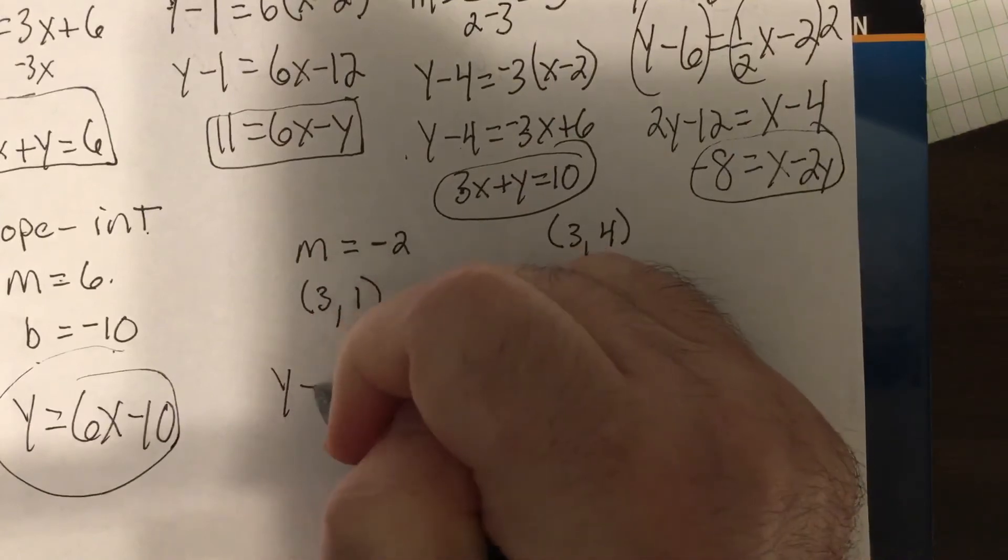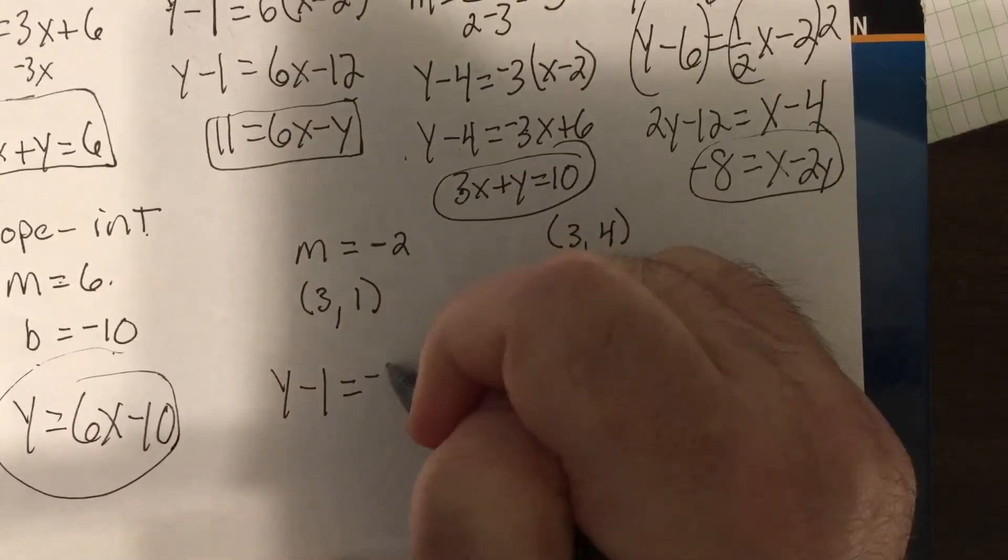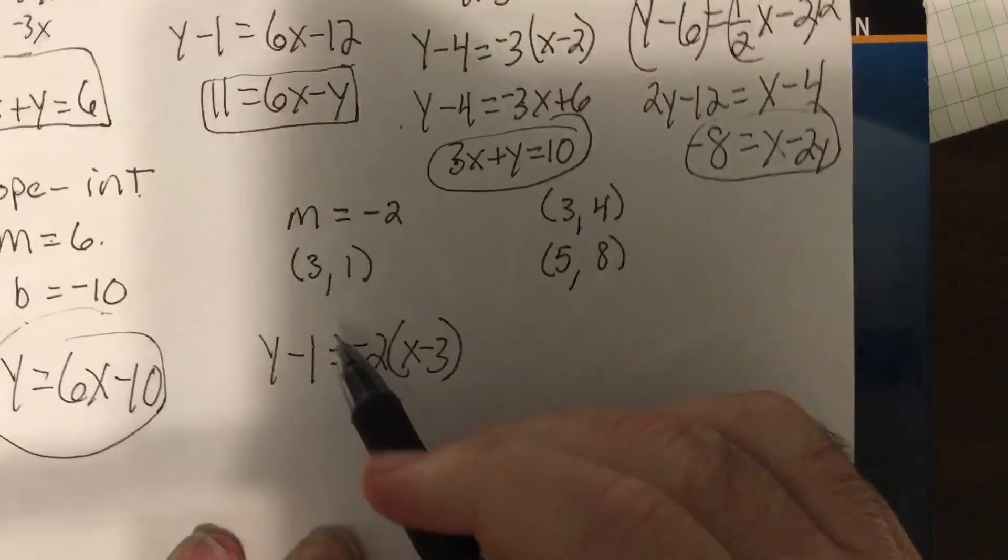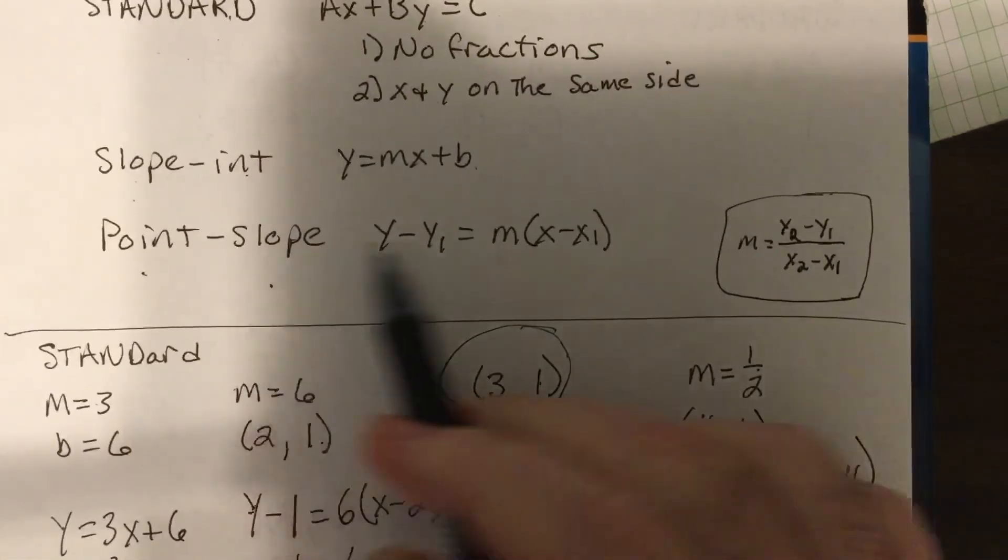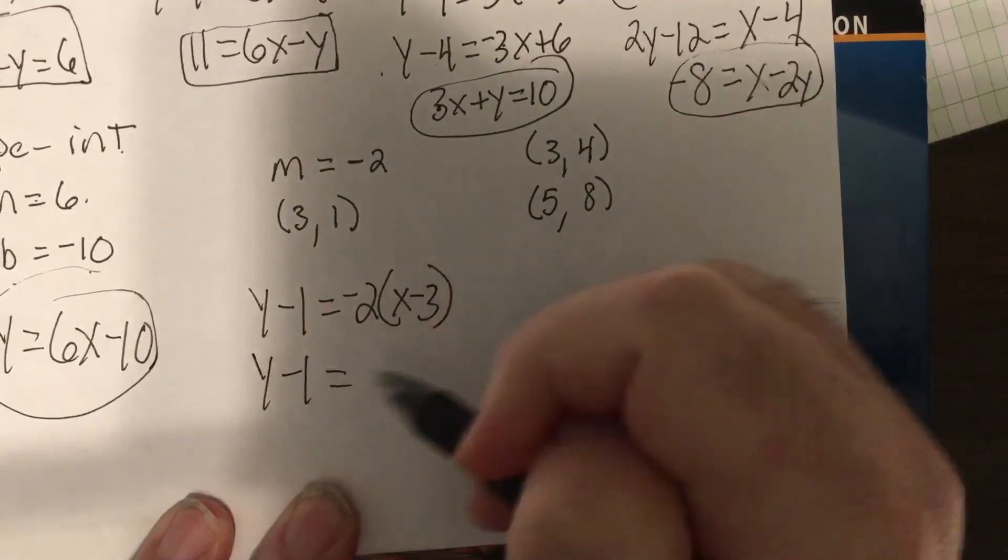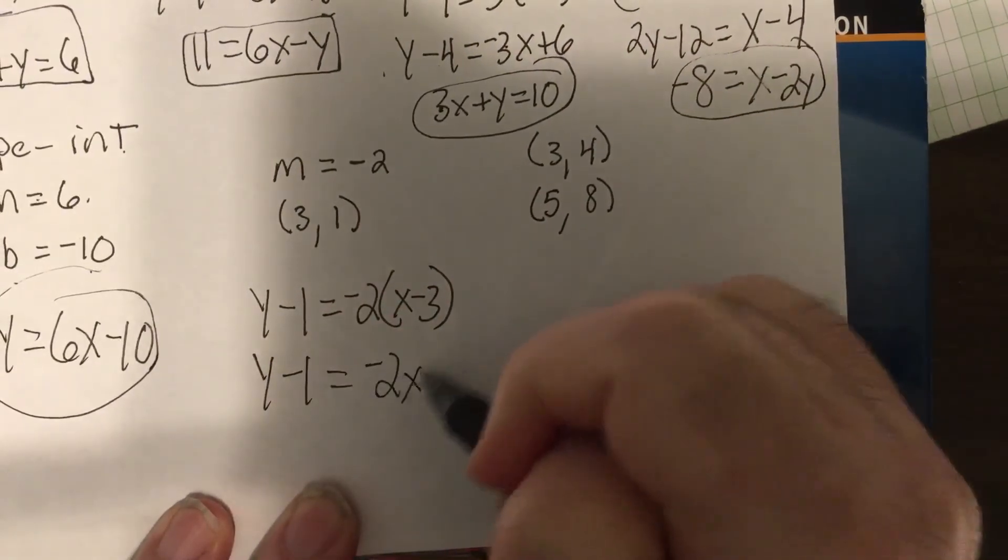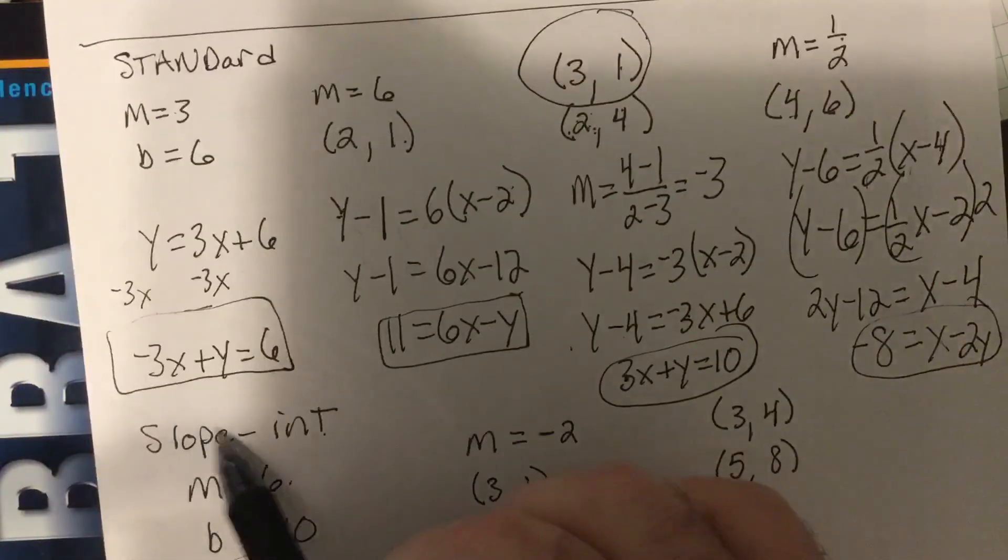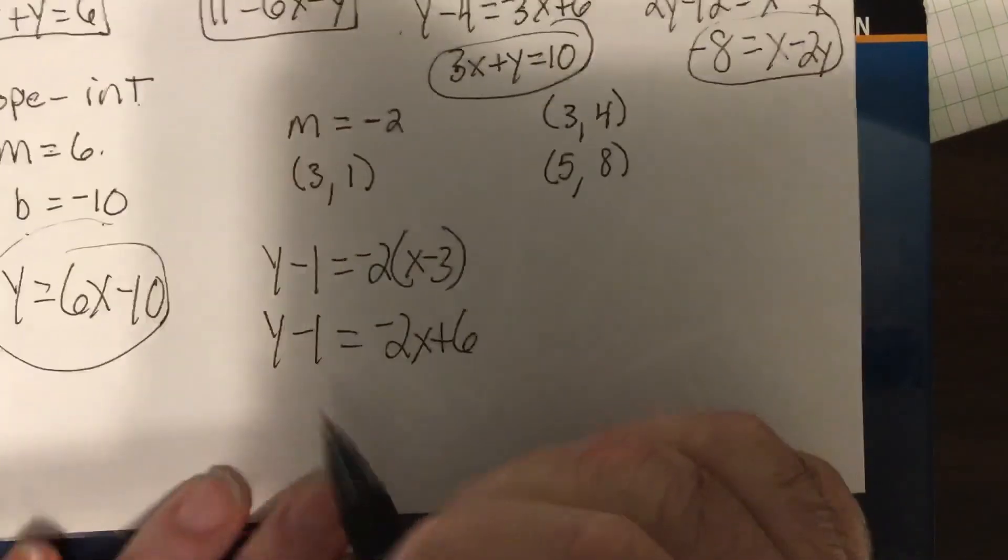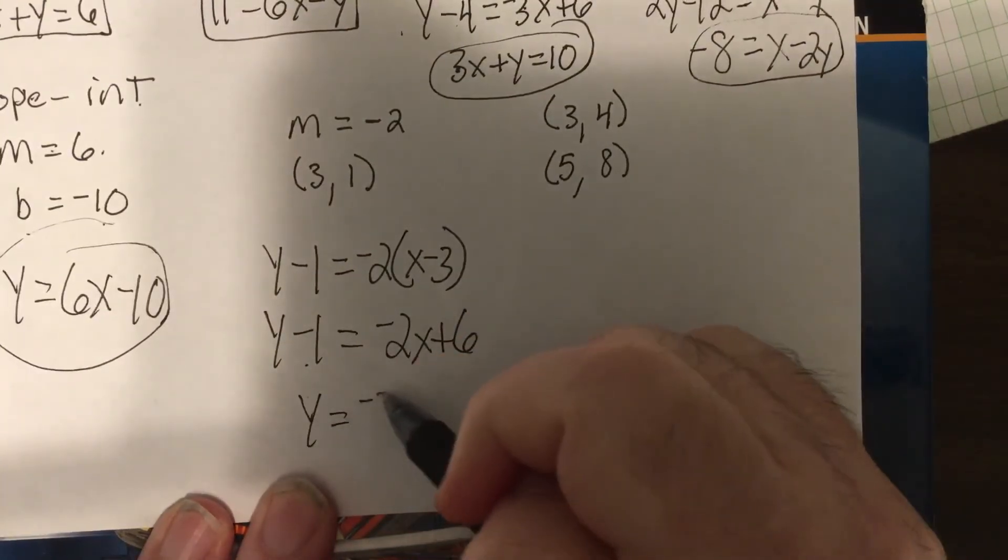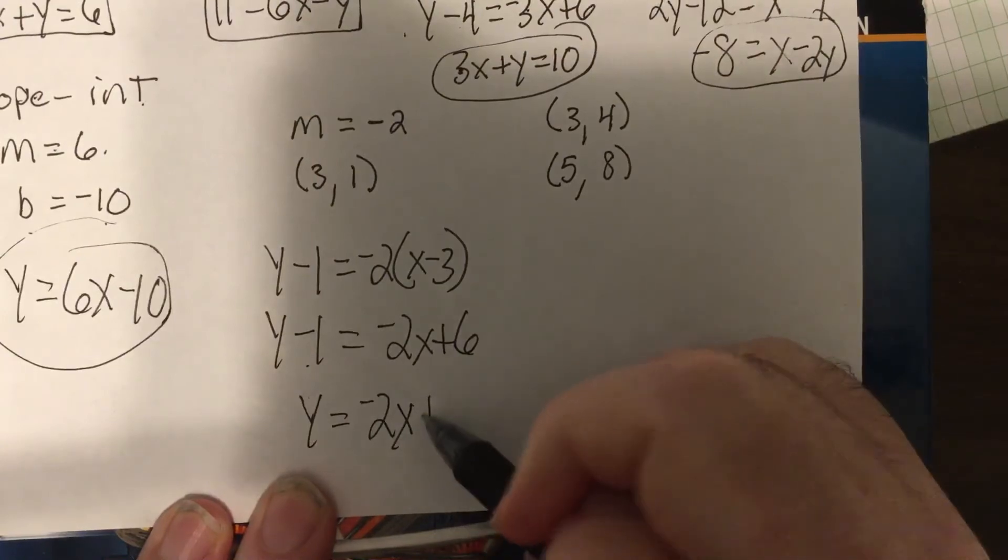So, y minus 1 equals negative 2x minus 3. I used point-slope. Point-slope, given a point and a slope. So, y minus 1 equals negative 2x plus 6. Now, I want this in slope-intercept form, the answer. So, I'm going to add 1 to both sides. y equals negative 2x plus 7.